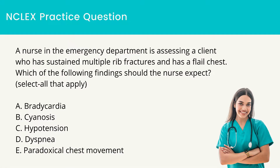Practice question: A nurse in the emergency department is assessing a client who has sustained multiple rib fractures and has a flail chest. Which of the following findings should the nurse expect? A. Bradycardia. B. Cyanosis. C. Hypotension. D. Dyspnea. E. Paradoxical chest movement.